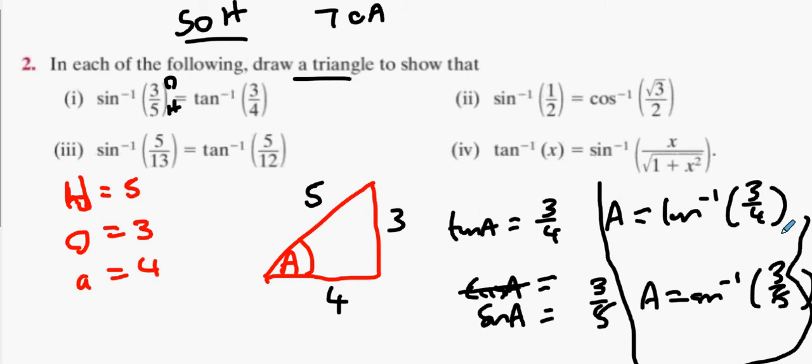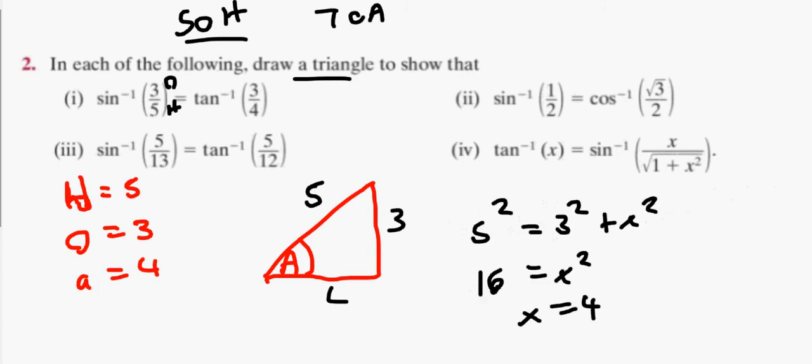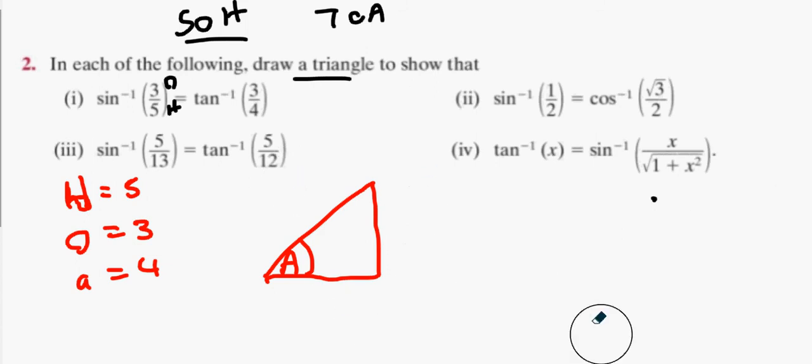Is that alright? Okay. Now let's look at the next one. Next one's difficult. Part 4 is a tricky one. Okay. We're just going to keep angle A. Is that alright? Now what's tan again?